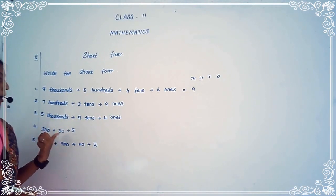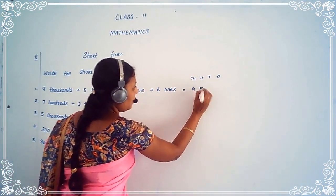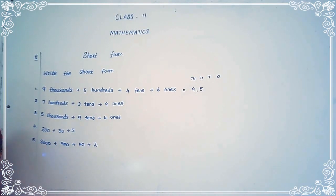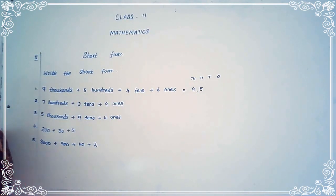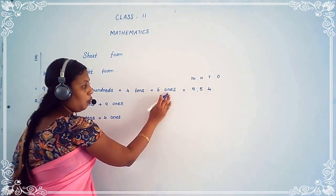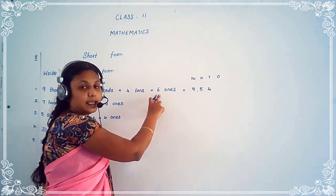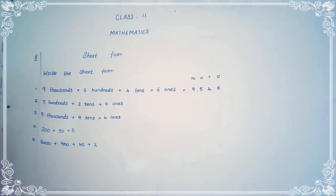Then see the hundreds place. How many hundreds is here? 500 — write five in the hundreds place. We put one comma to separate thousands from hundreds. Then see the tens place — 4 tens, write four. Then see the ones — 6 ones, write six. The answer is 9,546.